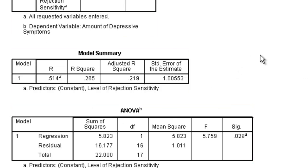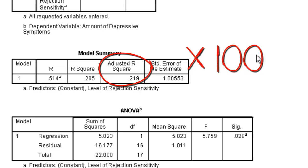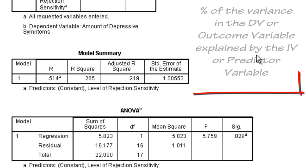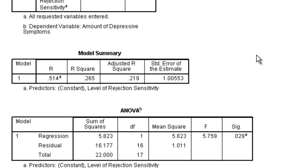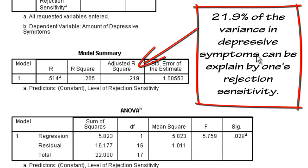We can go back up to our model summary and look at our adjusted R square. If you multiply the adjusted R square by 100 and interpret this as a percentage, this gives you the percentage of the variance in the dependent variable explained by the independent variable. In this case, we would say that 21.9% of all of the variability in depressive symptoms can be explained by one's level of rejection sensitivity.